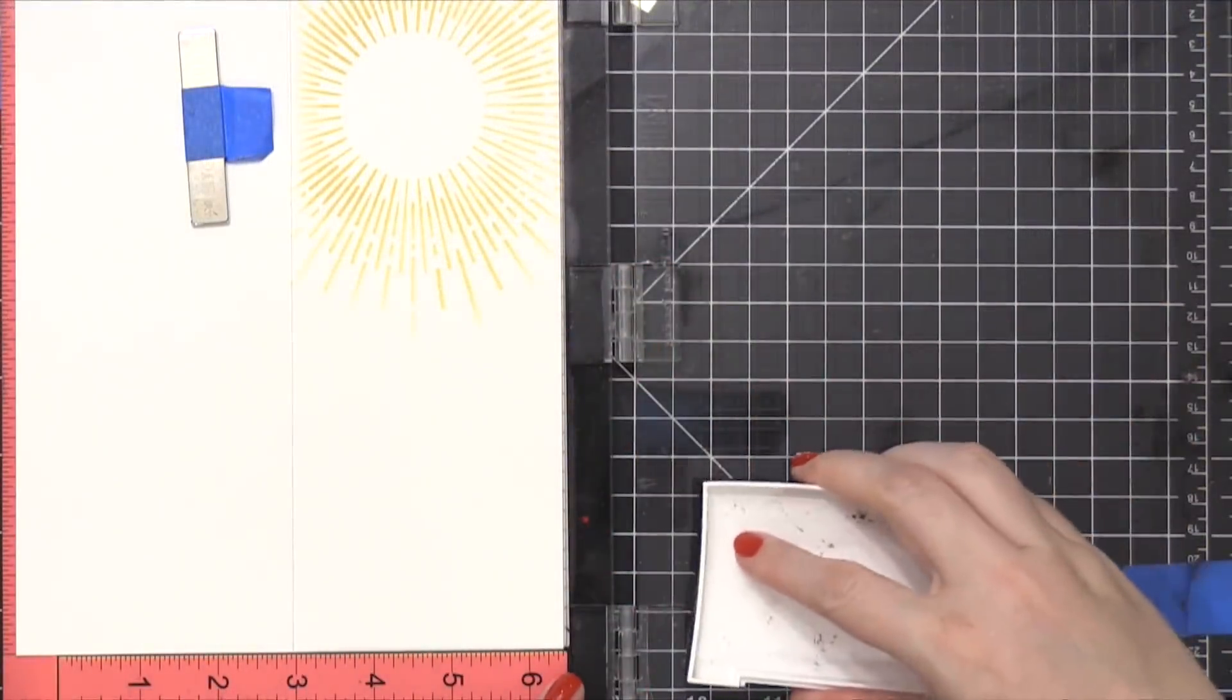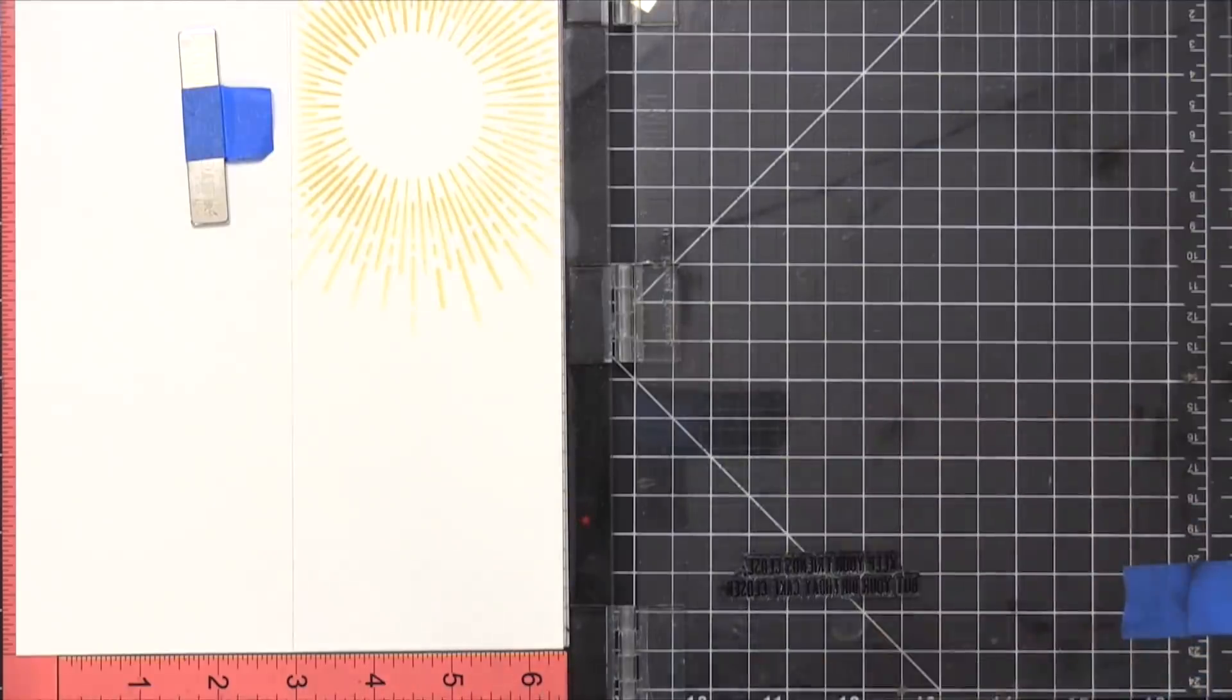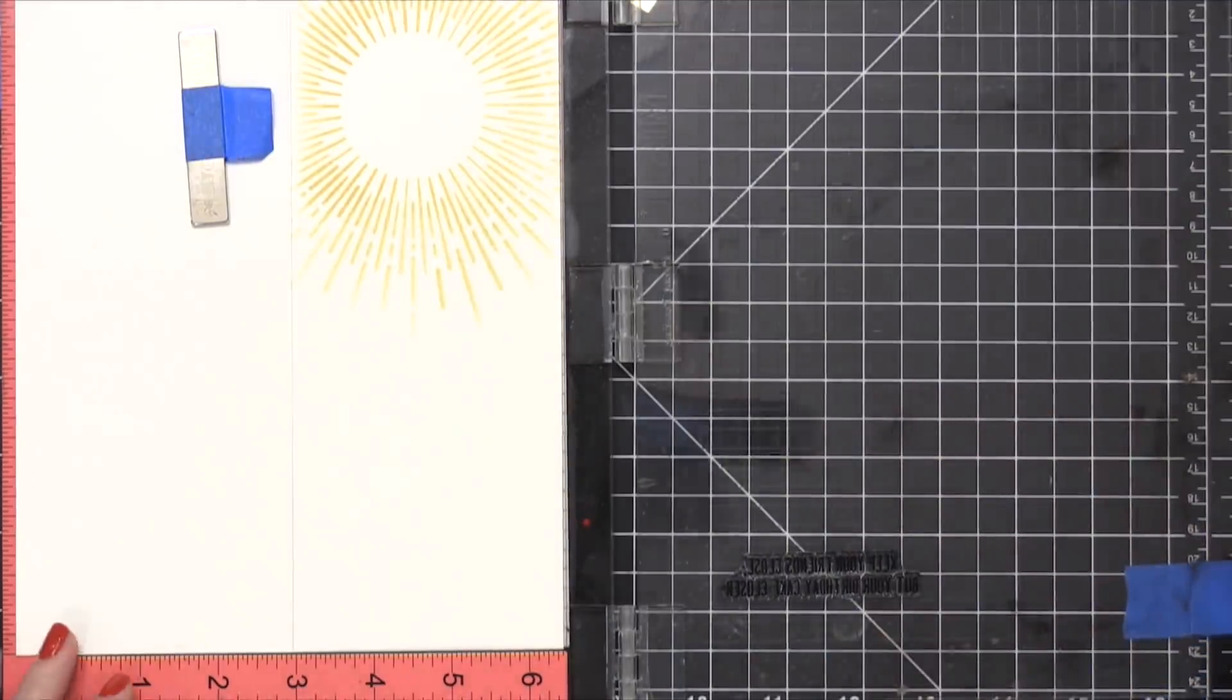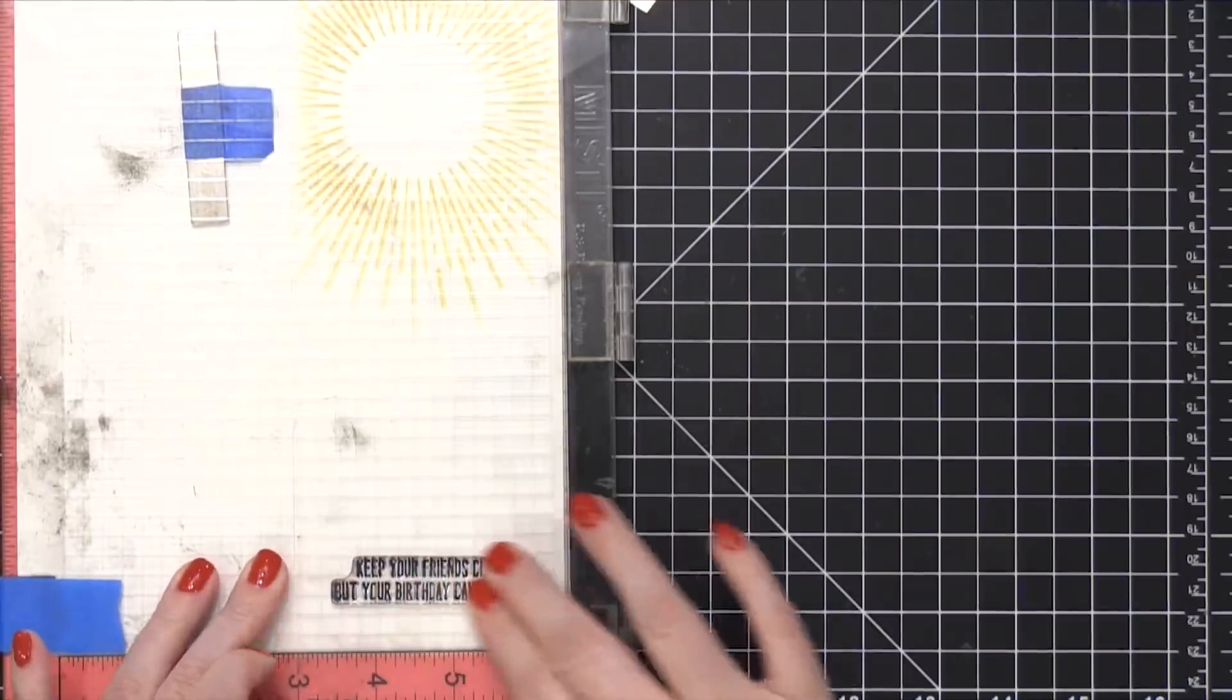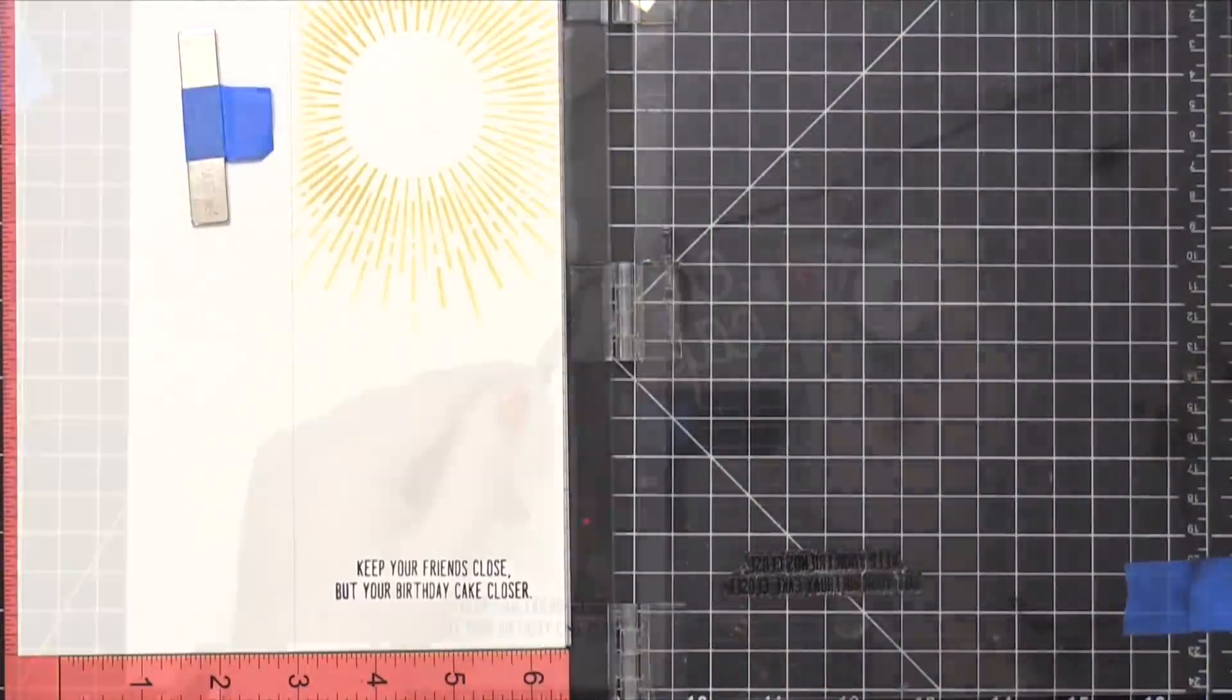So now I'm gonna take some VersaFine Onyx Black ink and stamp a greeting from that Concord & 9th stamp set at the very bottom. I love this greeting. It says, keep your friends close, but your birthday cake closer.